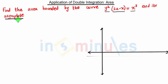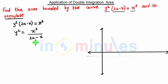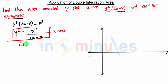We have to find the area between this curve and its asymptote. An asymptote is a tangent to the curve meeting at infinity. Let's take this curve: y²(2a − x) = x³, so y² = x³ / (2a − x). Whenever we have y² equal to some function of x, it is always symmetric about the x-axis.